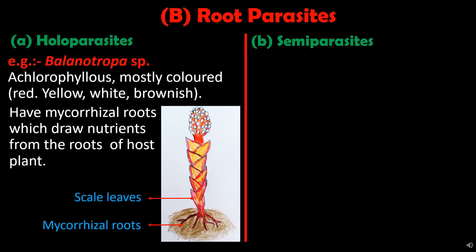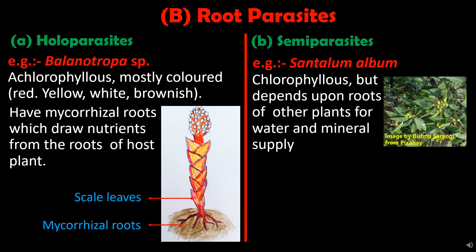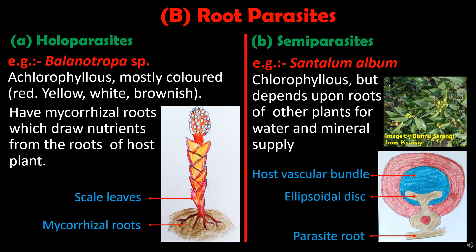The other type of root parasite is the semi-parasite. These plants depend partially on the host root for their nutritional requirements. Example is Santalum album. This plant is chlorophyllous — it can synthesize organic food through photosynthesis — but depends upon the roots of other plants for water and mineral supply. Young seedlings of Santalum album can grow independently for up to a year, but not beyond. Within this period, some plants develop parasitic roots, or haustoria, which make a connection with the roots of nearby trees for water and mineral supply.